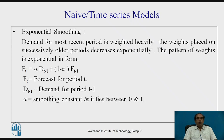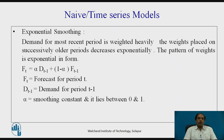Weighted moving average can be further refined using a method called exponential smoothing. In exponential smoothing, the demand for the most recent period is weighted most heavily, and the weights placed on successively older periods decrease exponentially. We are trying to smooth out the total demand by applying a weight factor, where the latest data has more weightage compared to older data, and the weightage decreases in an exponential manner as we go further back.